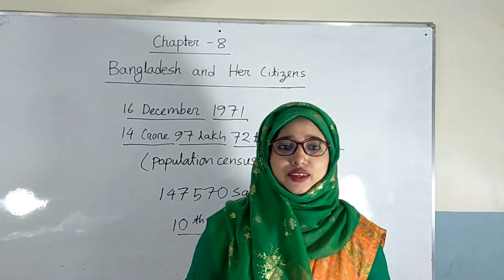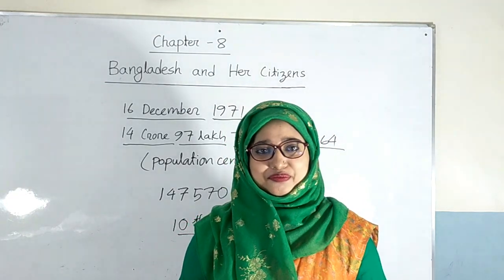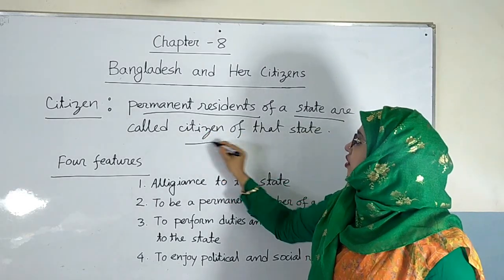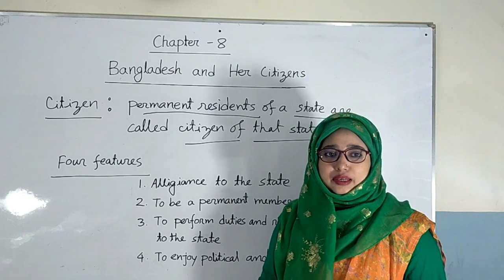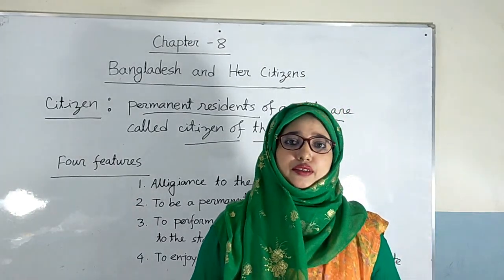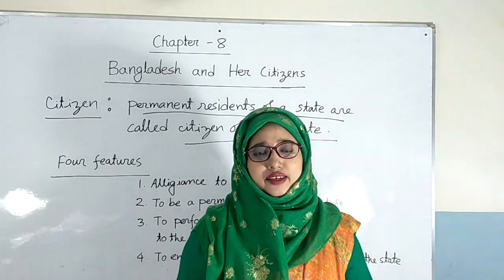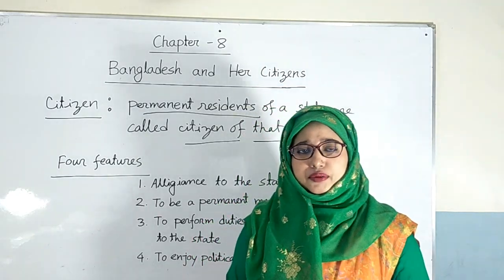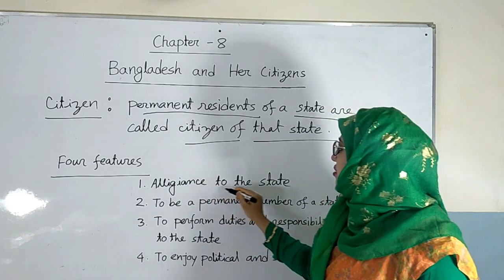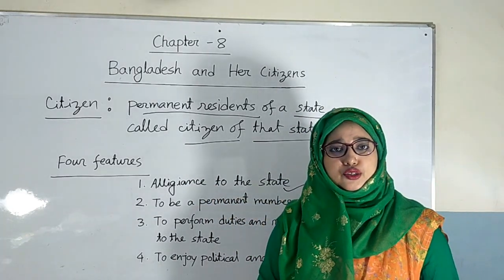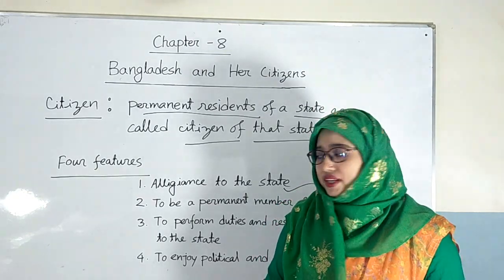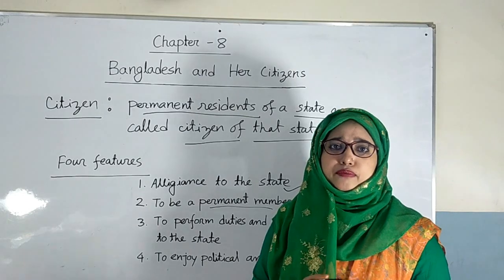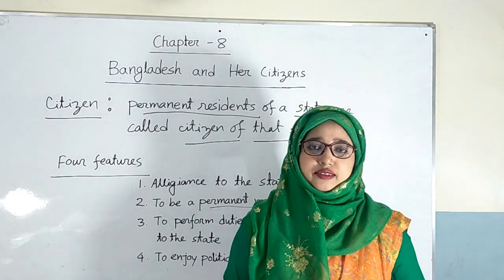Now I am going to discuss the citizen and the concept of citizenship. What is citizen? Permanent residents of a state are called citizens of that state. That means a person's residence in a state should be permanent for them to get citizenship of that country. There are four main features of a citizen. Number one is allegiance to the state — a citizen should be loyal to his or her state. Number two, to be a permanent member of a state — he or she should be permanent to get citizenship of that country.